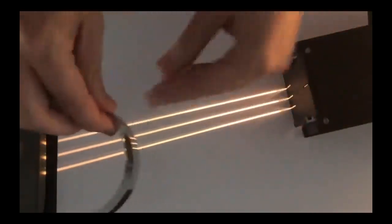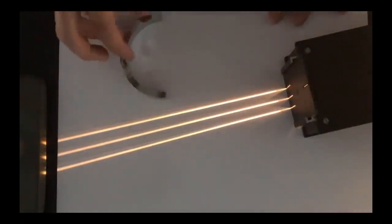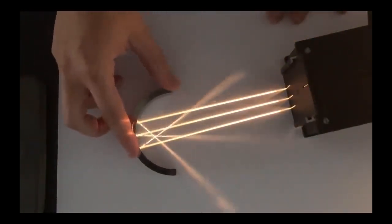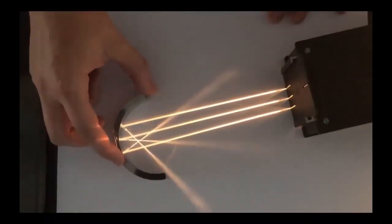So concave, walking into the cave, the light is going to go into the cave. Convex, it's going to hit the outside. Now the way the light behaves with a concave mirror is that it will actually focus into a specific point.